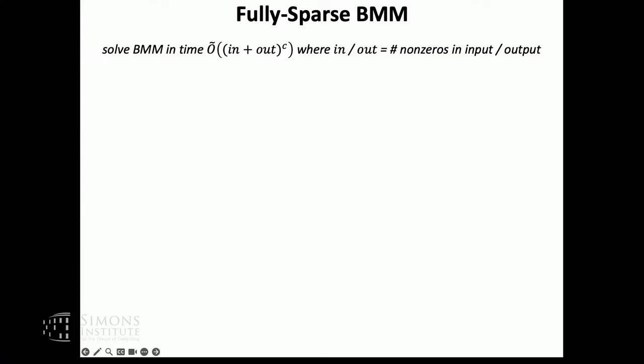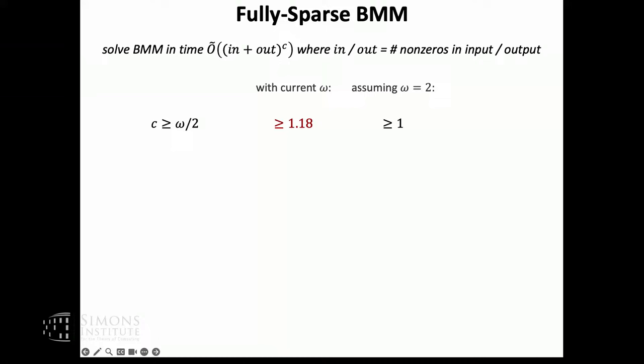Boolean matrix product is widely studied, also in very sparse settings. The only results I'm aware of that have a bound in terms of output size are as follows. The trivial lower bound: if you can solve sparse BMM in this time, then by using the upper bound that input and output sizes are at most n squared, you can also solve the dense case of BMM in time n^{2c}. So c should be at least omega/2, and with the current bound of omega, the exponent has to be roughly at least that.